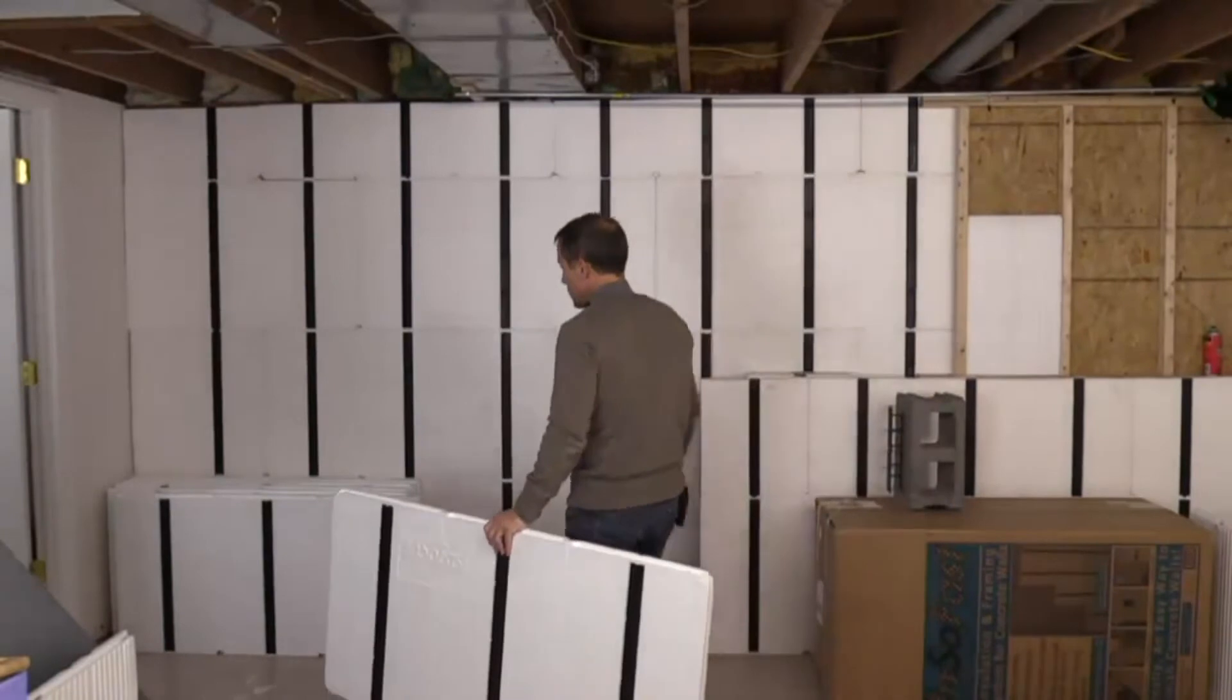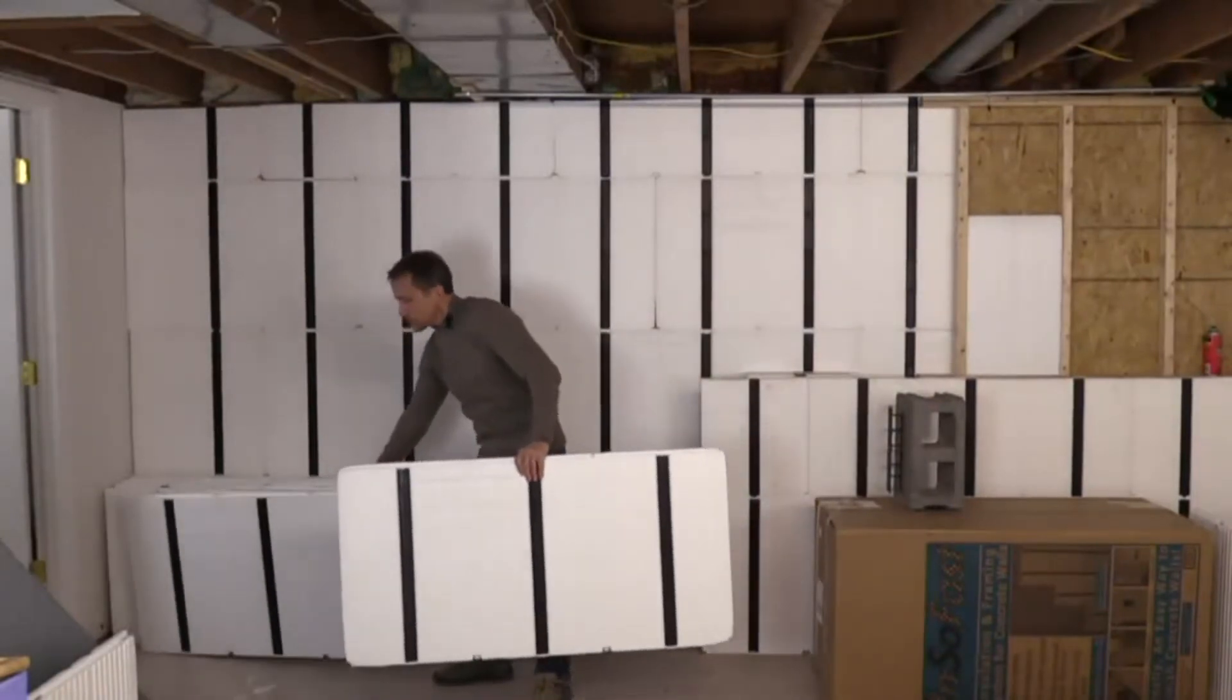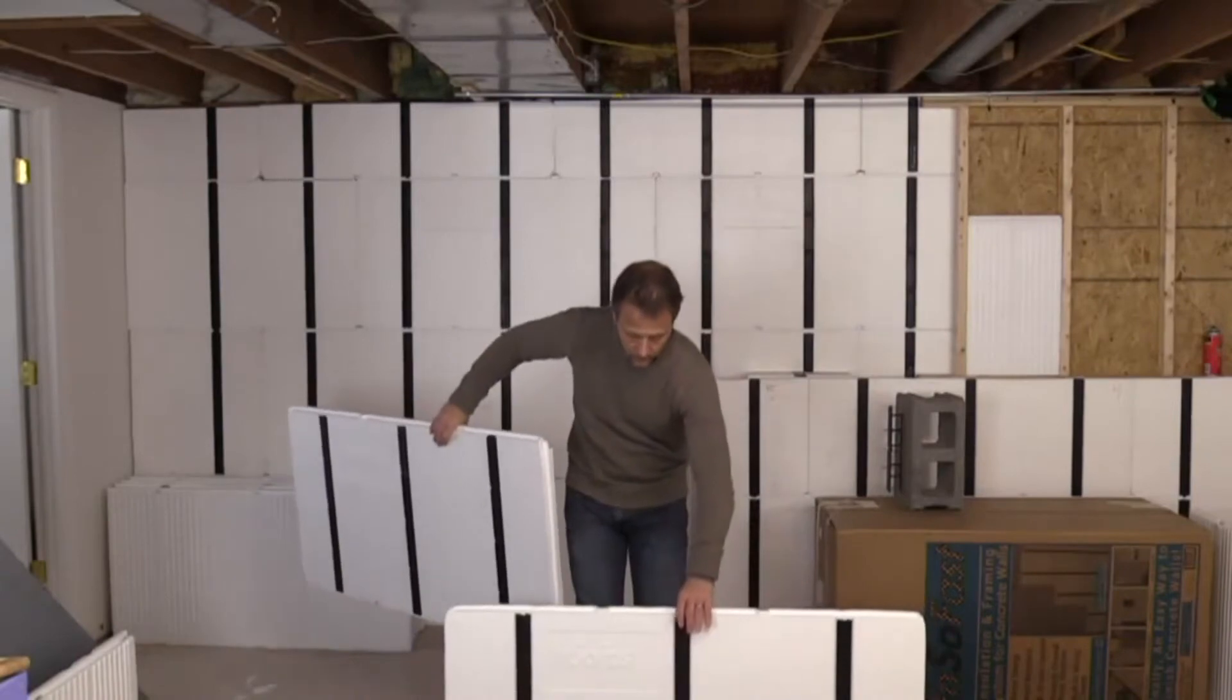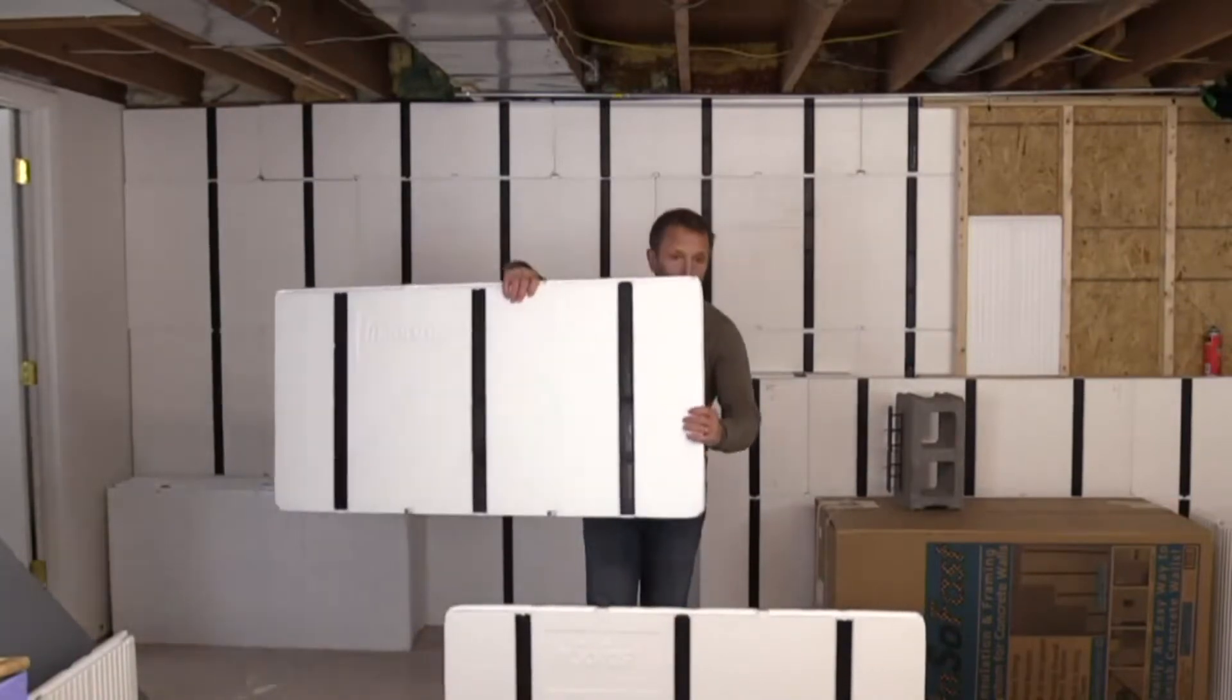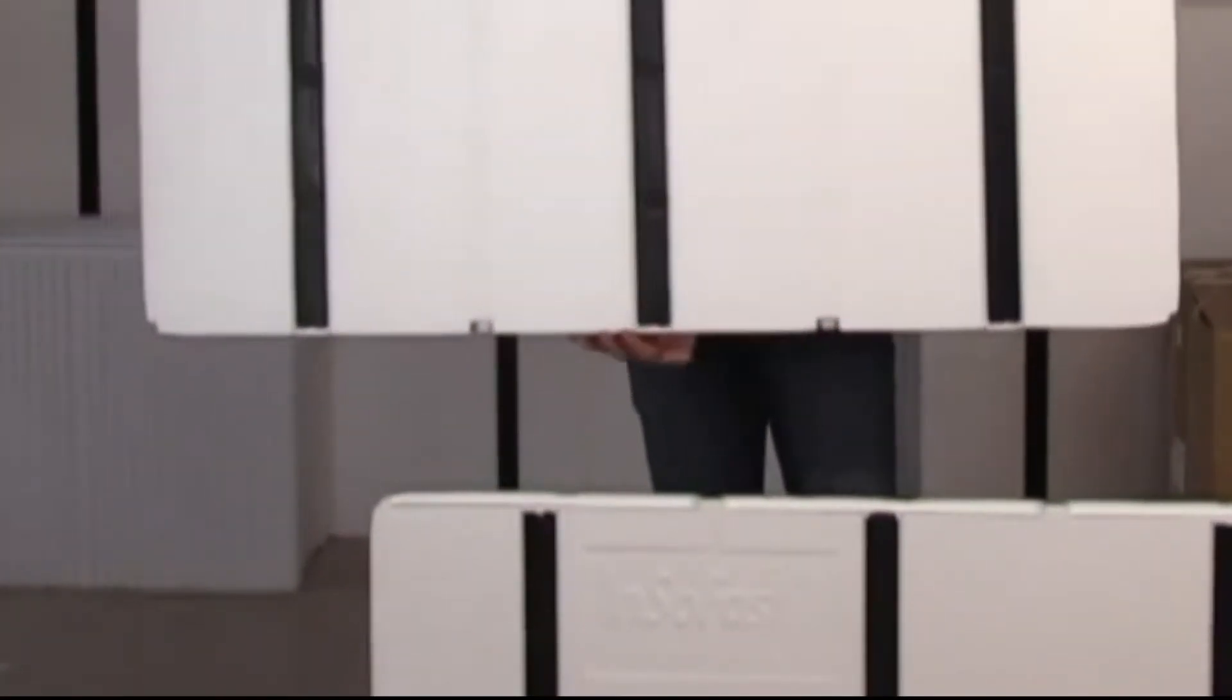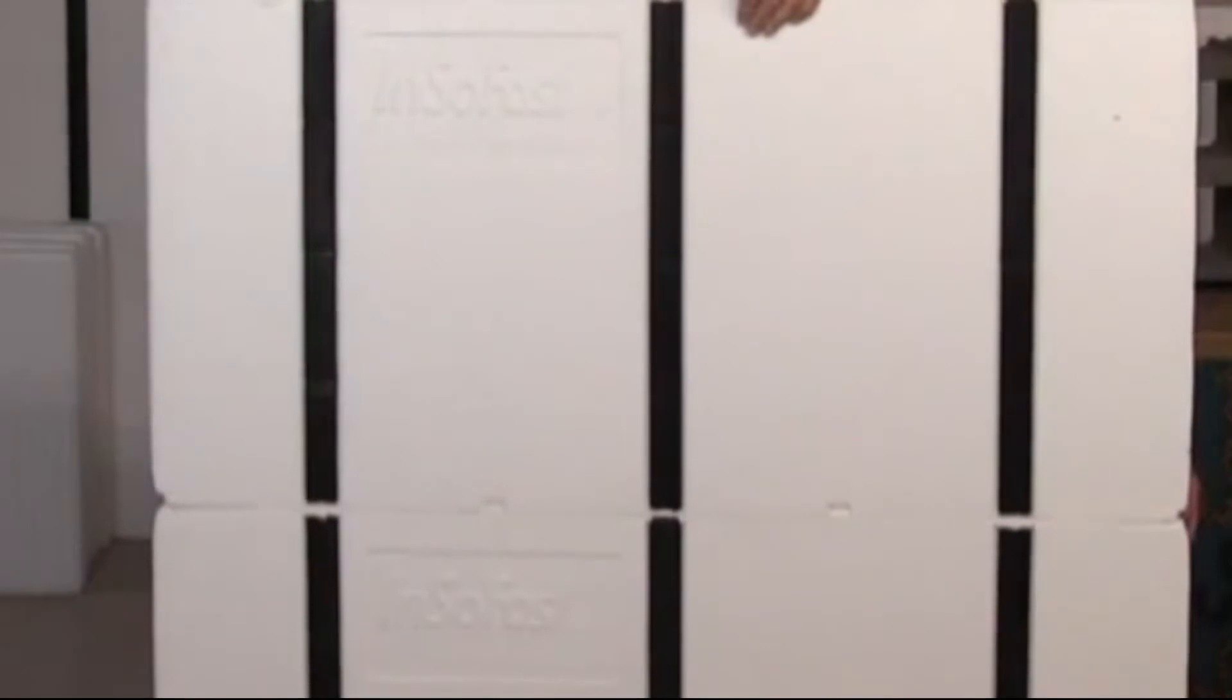When we put the two panels together, we have alignment notches, and you can see the alignment notch right here and there. You can't mis-stack these. You can only stack them when the panels line up and they seat together.